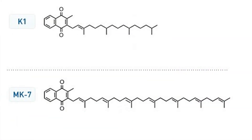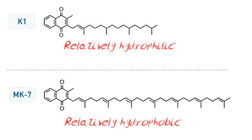Without getting into too much detail, the crux of the matter is that Vitamin K1, or phyloquinone, is relatively hydrophilic, whilst K2, or menaquinone, tends to have a more hydrophobic tail. This essentially allows K2 to be transported and remain in the blood longer, which in turn allows it to reach tissues outside of the liver.